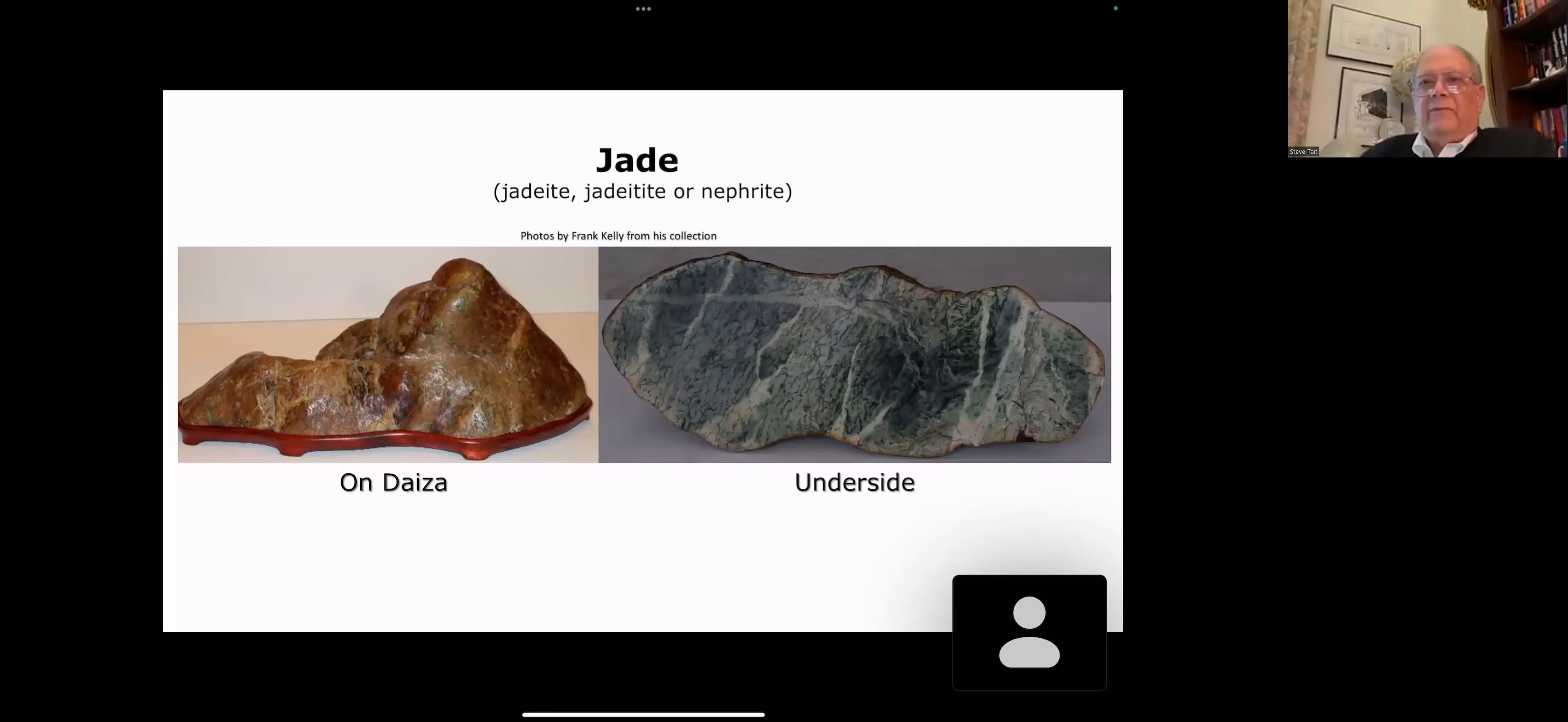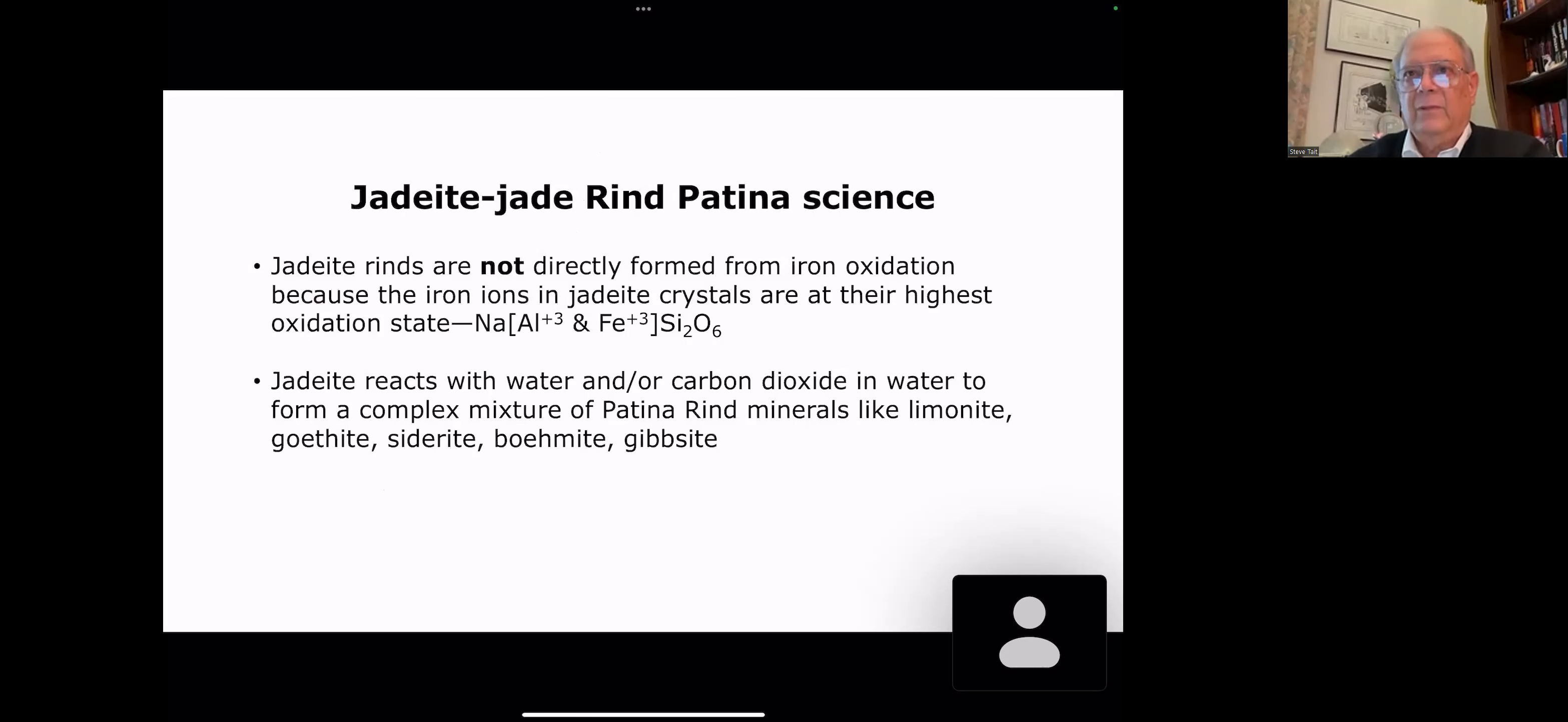After the patina science one seminar, Frank Kelly sent some pictures to me of one of his favorite mountain viewing stones. Here it is on its daiza. It's just really cool colors. You get a slight green, but you get tones, browns and reds and golds and so on. And when you take it off the stand and look at the bottom, the rock is green. So Frank's question to me is, Steve, what makes my green rock brown? Well, it's the patina. And there's some interesting science behind this.